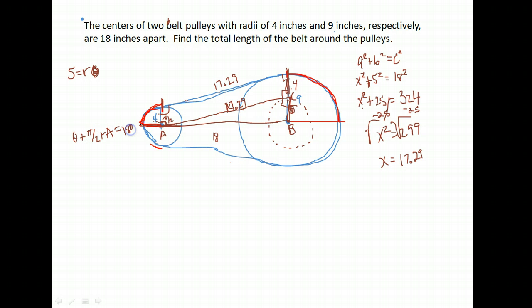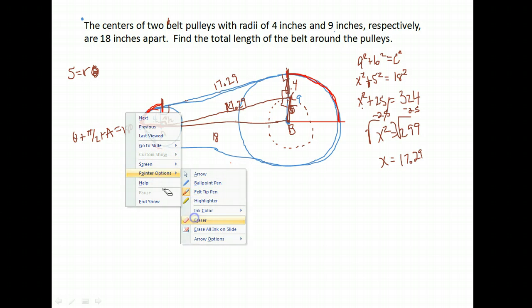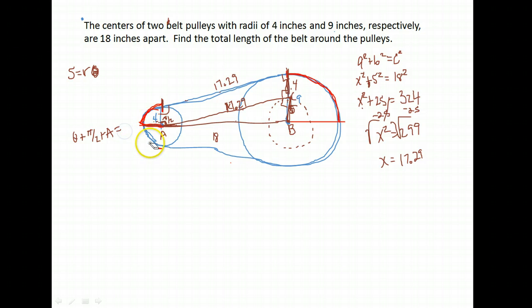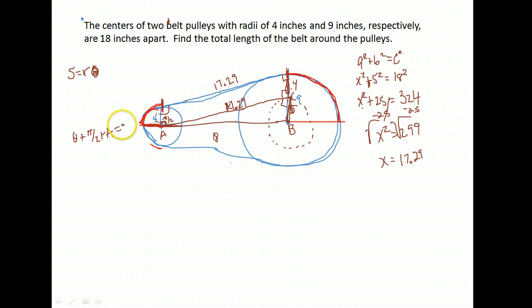Let me replace that 180 with radian measure, since we're doing this in radians. You can do the same thing with degrees and then convert. π is a half circle or a straight line. So we have θ + π/2 + A.